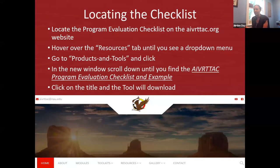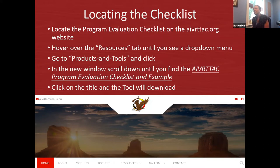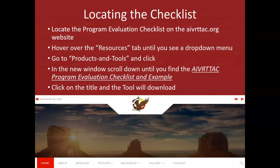The checklist is on our website. If you go to AVERTEC.org, there is a resources tab on the right. If you hover over the resources tab, you'll see a drop-down menu. The first option is COVID-19 resources, and the second is products and tools. Click that and the AVERTEC program evaluation checklist and example is near the top of the list. Click the title to download it.